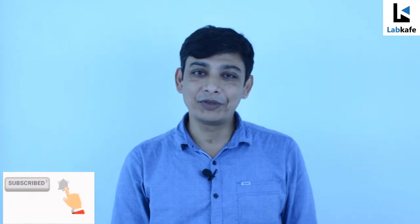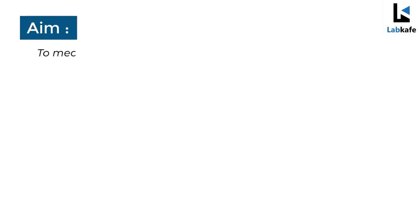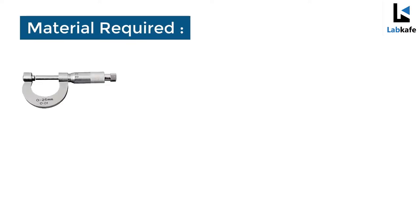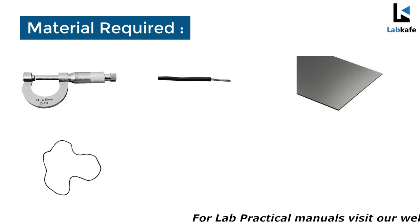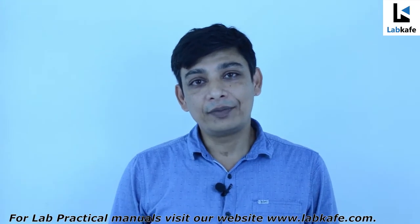Hello everyone, welcome to the Lab Cafe's practical session. Today we are going to talk about how to use a screw gauge. The aim of the experiment is to measure the diameter of a given wire, thickness of a given sheet, and the volume of an irregular lamina using a screw gauge. Materials required: a screw gauge, a given wire, a given metallic sheet, an irregular lamina with uniform thickness, graph paper, and a ruler.